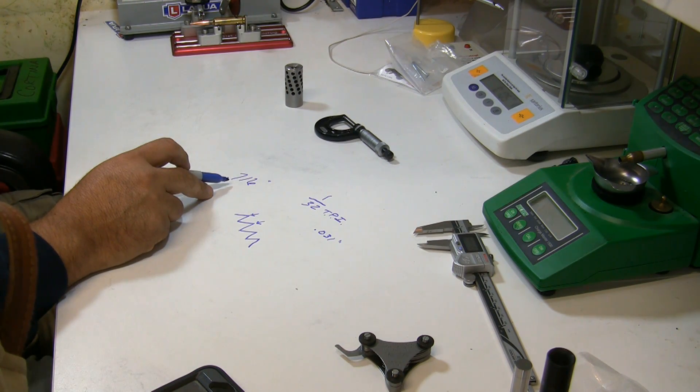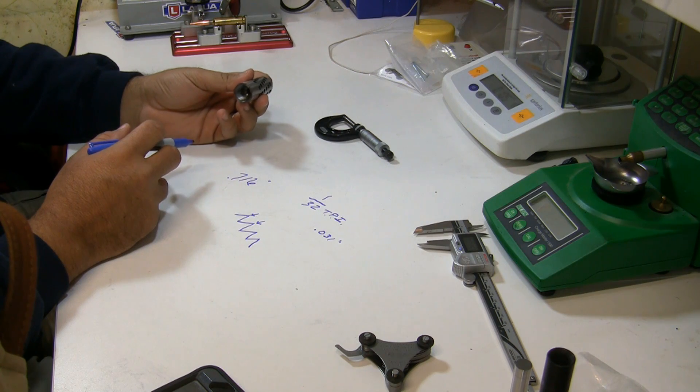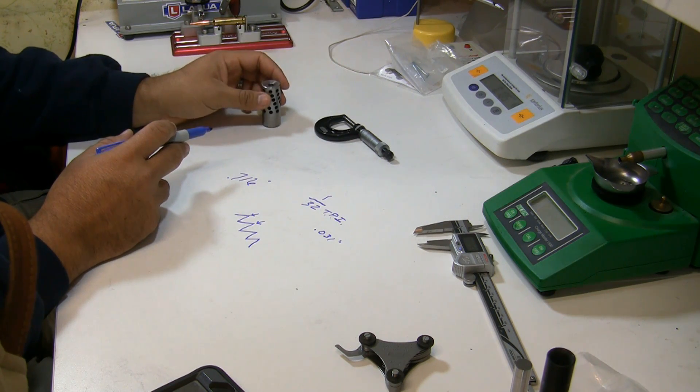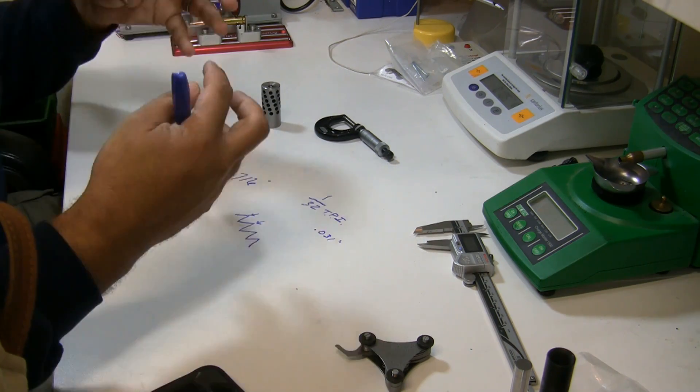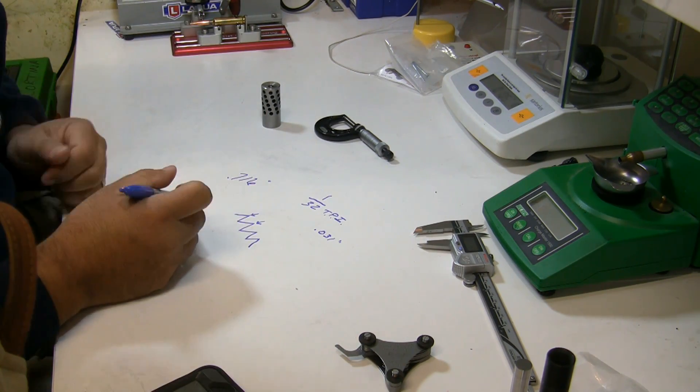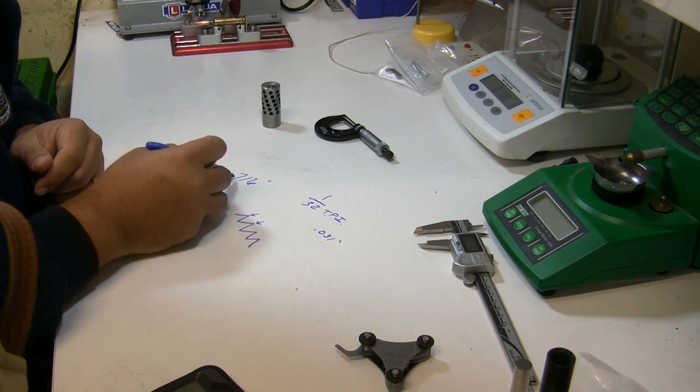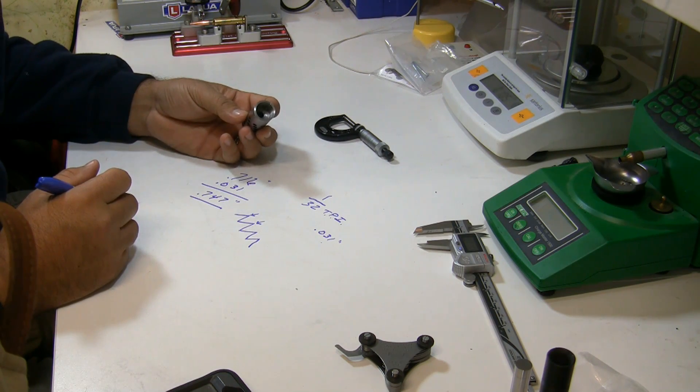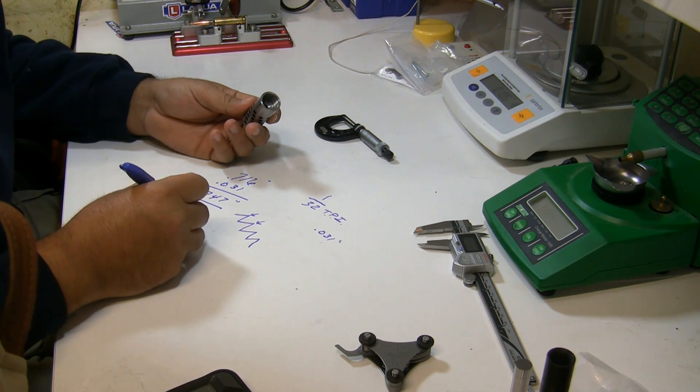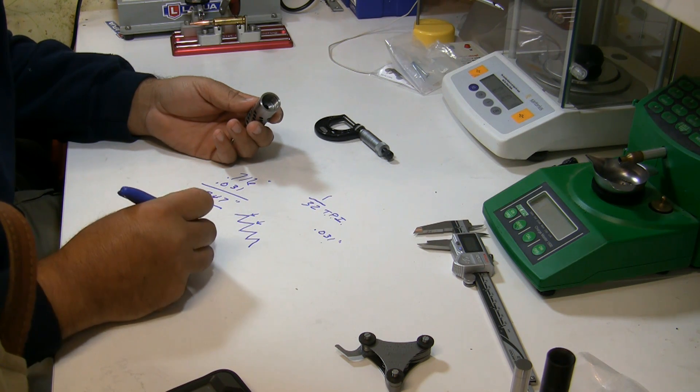Okay, now this is the minor diameter of the threads because it's an internal thread. The major diameter is what the mating part needs to be so that they can mate. So what we do is we add this 31 thousandths to the 7/16. This tells me that the thread on this muzzle brake is 3/4-32.